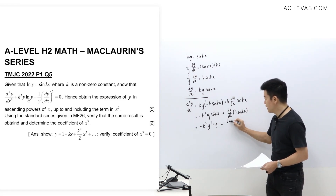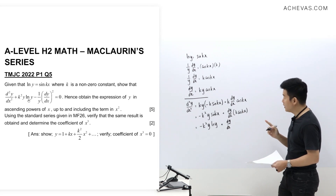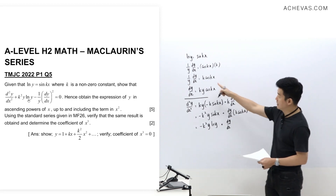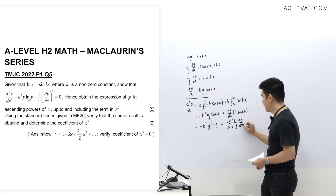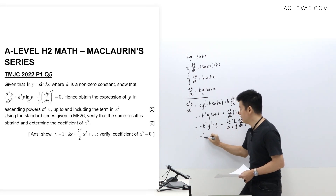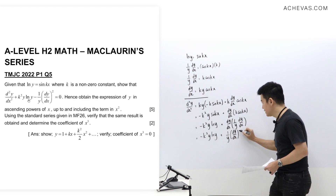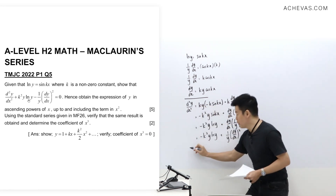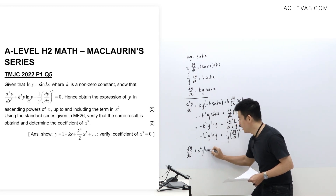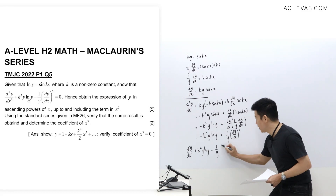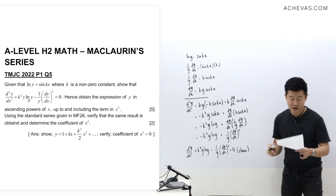Rearranging, we get: d²y/dx² − k²·y·ln(y) = (1/y)·(dy/dx)², then shifting over: d²y/dx² + k²·y·ln(y) − (1/y)·(dy/dx)² = 0. And this is exactly what we are supposed to show.